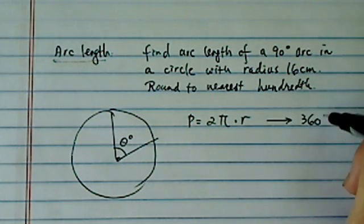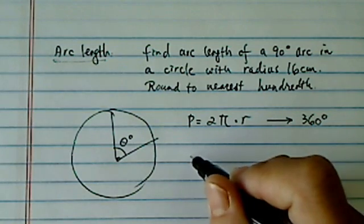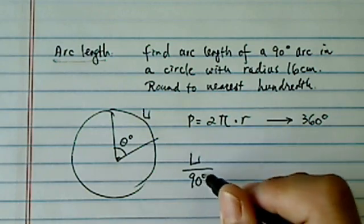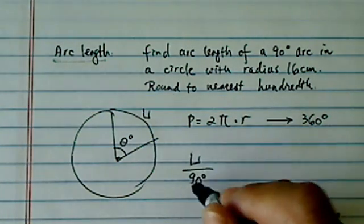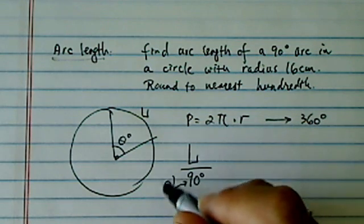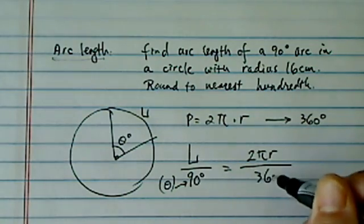Perimeter is for 360 degrees of arc length. So whatever arc length we're finding, or let's call this L, that's equal to the degrees you're given, which is 90 degrees for us, for any theta as a matter of fact, is going to equal 2 pi r over 360.